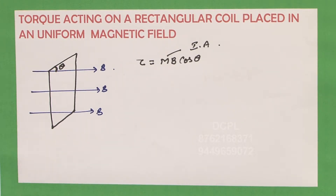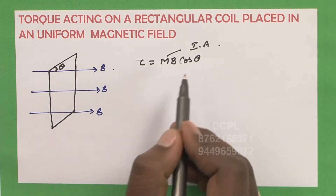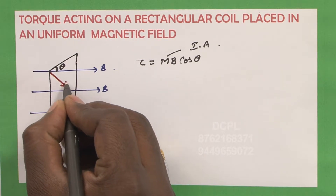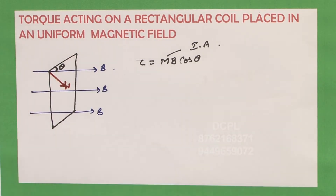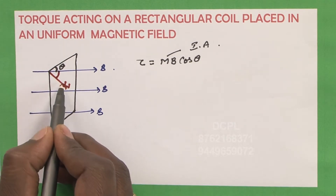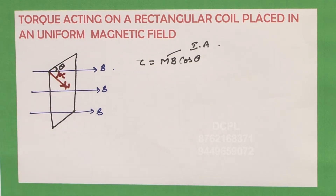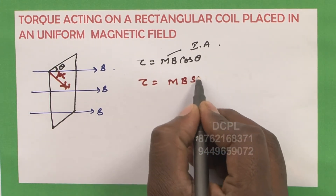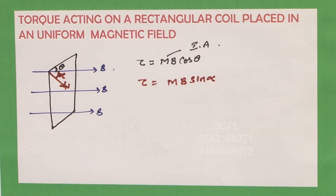Students, be very careful here. If the angle is not measured from the plane of the coil but from the normal to the plane, let the angle be alpha. Then the torque is given by M into B into sin alpha. The formula is M B cos theta when the angle is from the plane, or M B sin theta when the angle is measured from the normal to the magnetic field.